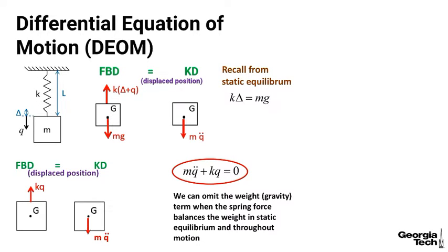We can simplify our FBD equals KD by just having kq up and m q double-dot down. I don't show the mg, I don't show the k delta, because they are always balanced out. So we can omit the gravity force or gravity term when the spring force balances the weight in static equilibrium and throughout motion.